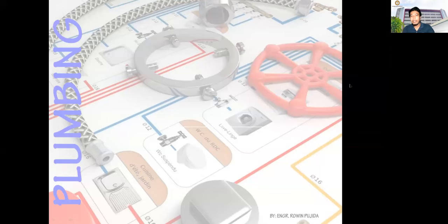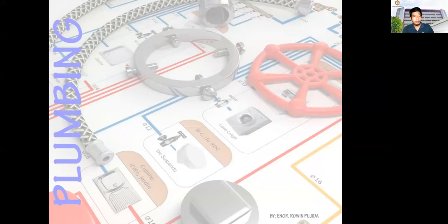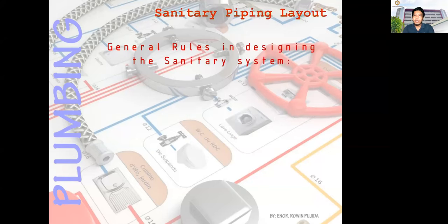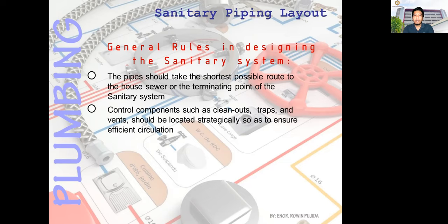Good day. Today's topic is the sanitary drainage system. For the sanitary piping layout, there are general rules in designing the sanitary system. All provisions given by the National Plumbing Code should be followed. The pipe should take the shortest possible route to the house sewer or the terminating point of the sanitary system. Control components such as clean-outs, traps, and vents should be located strategically to ensure efficient circulation.